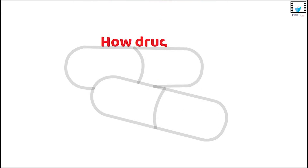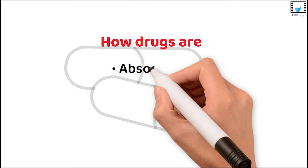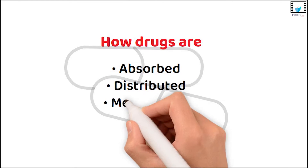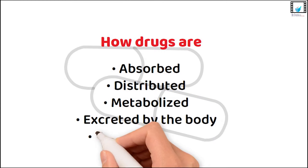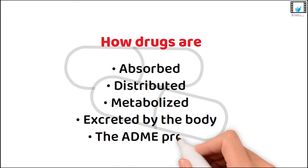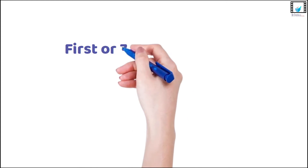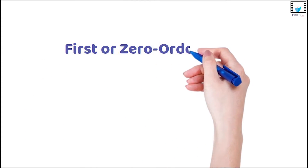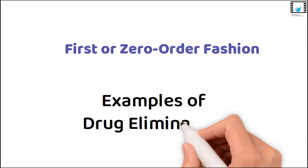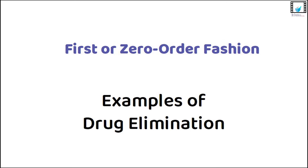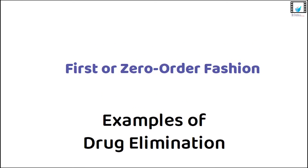Pharmacokinetics studies how drugs are absorbed, distributed, metabolized, and excreted by the body — the ADME profile. These processes can happen in a first- or zero-order fashion. To make things easier, we will consider examples of drug elimination to illustrate these two terms.